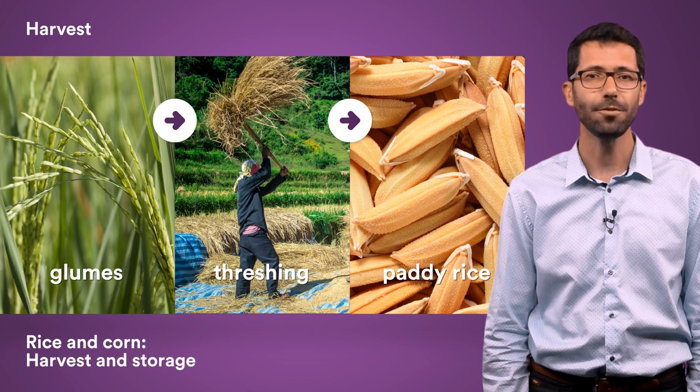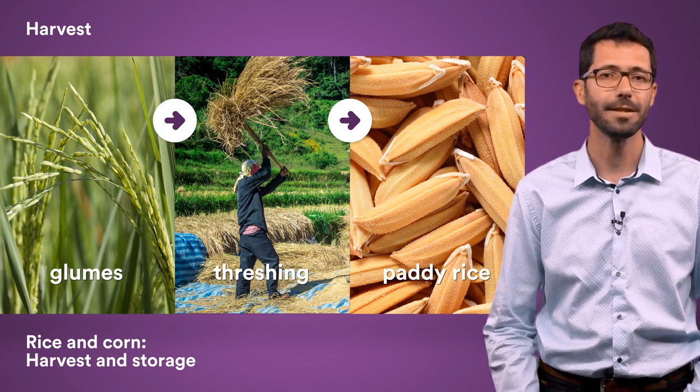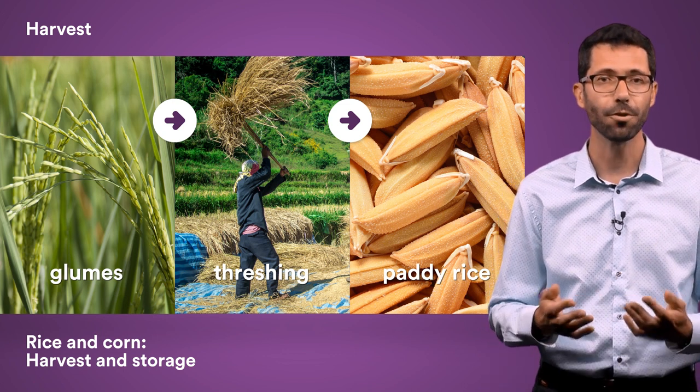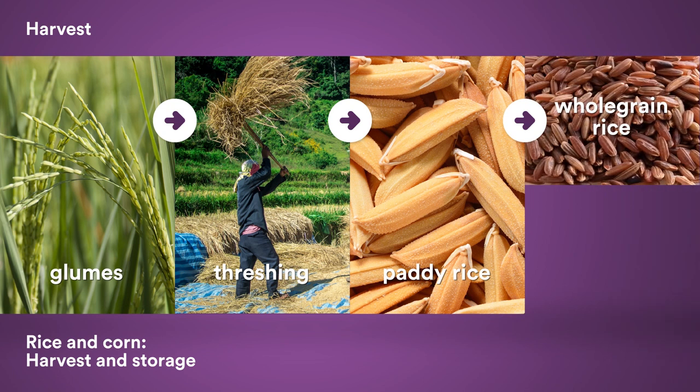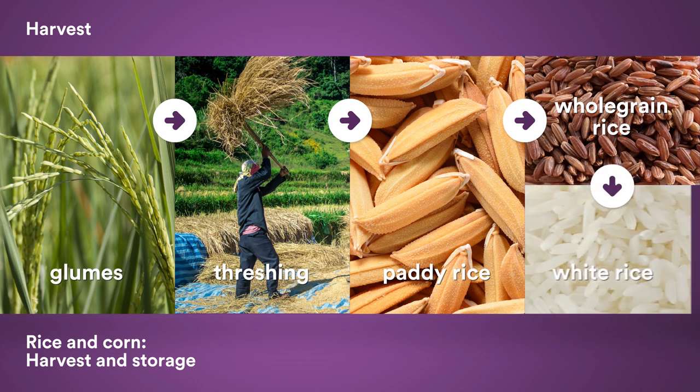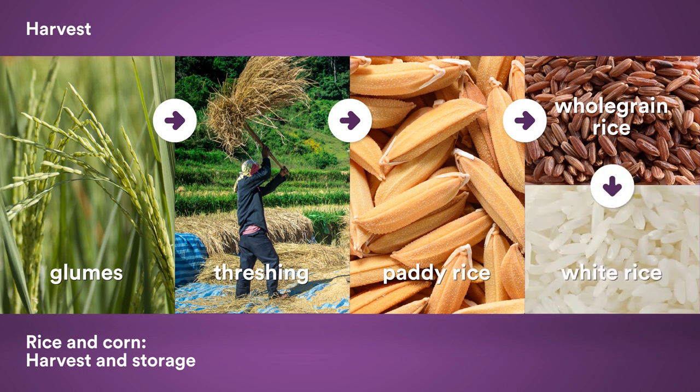The husk covering paddy rice is hard and inedible. Once it has been removed, we get what is called whole grain rice, brown rice or cargo rice, which has many nutritional properties. Removing the germ and bran, another envelope that covers the grain, gives white rice. The grains are then parboiled.